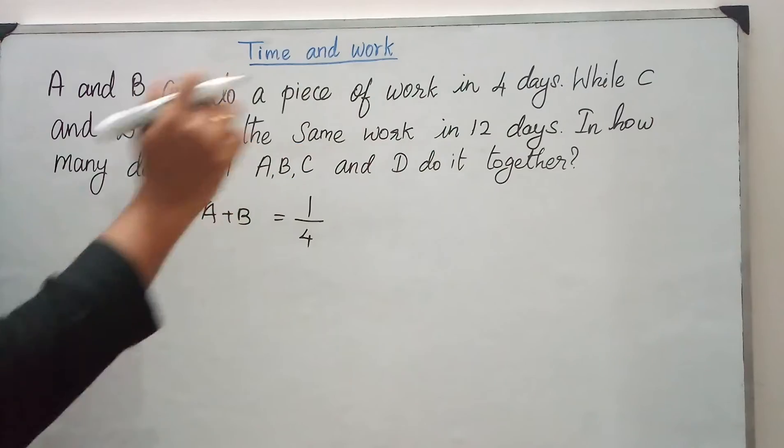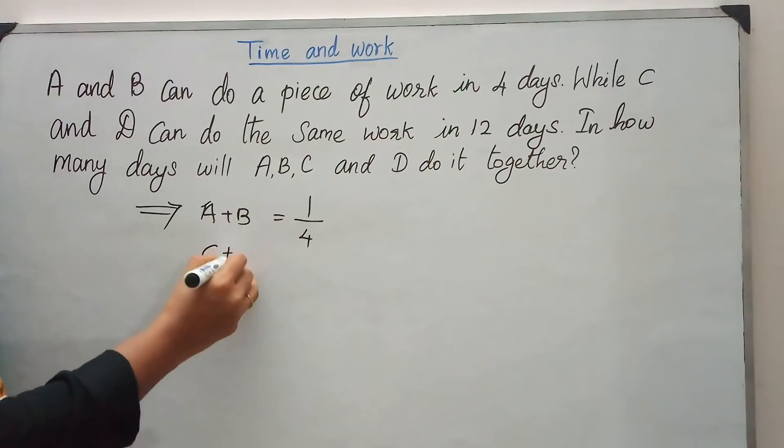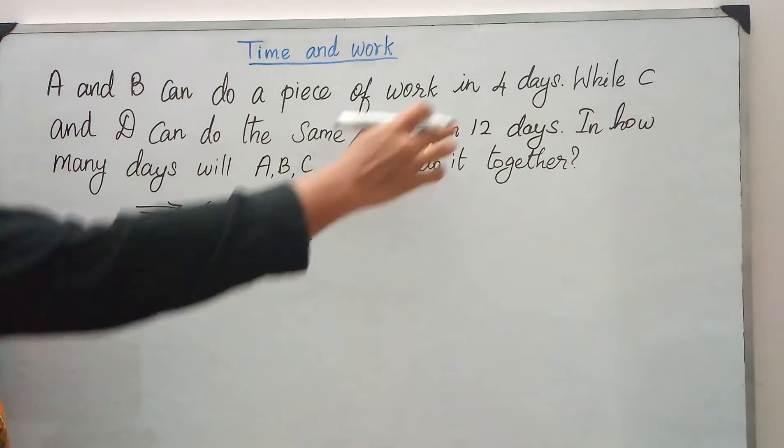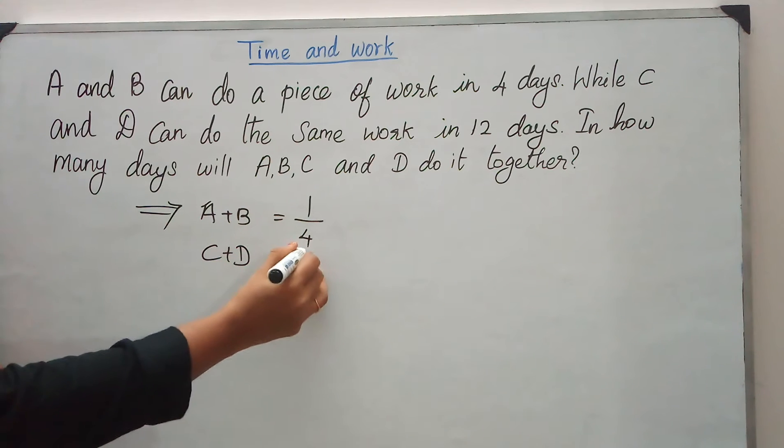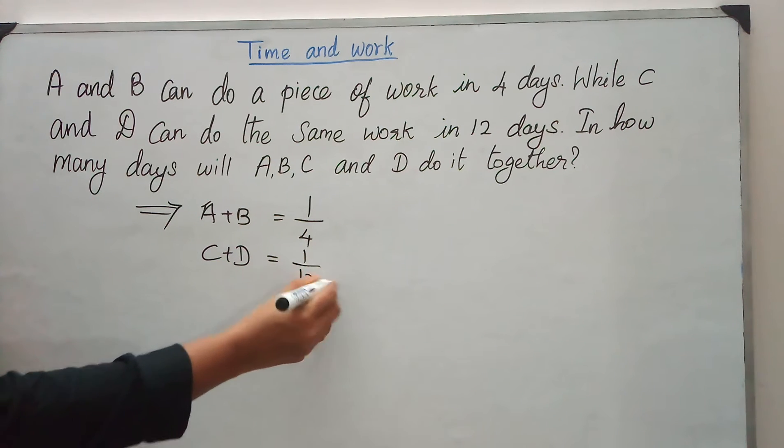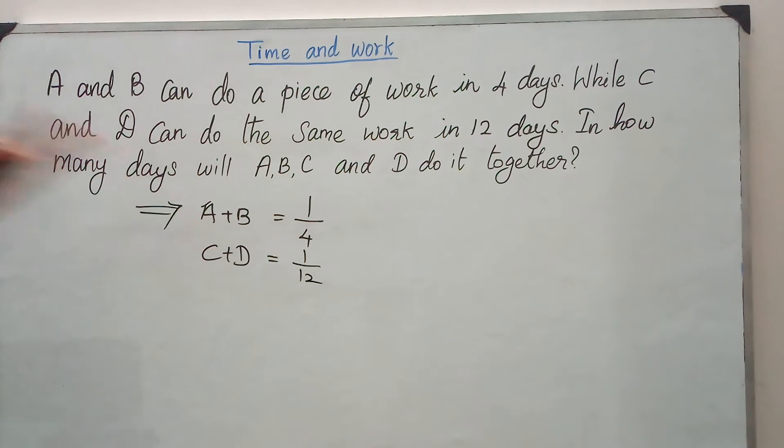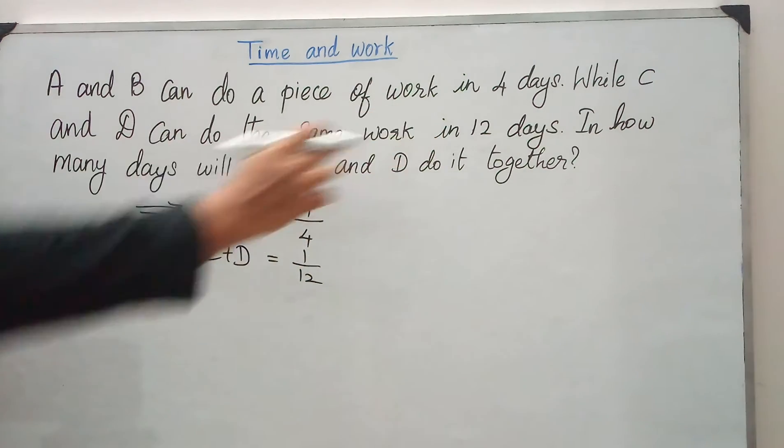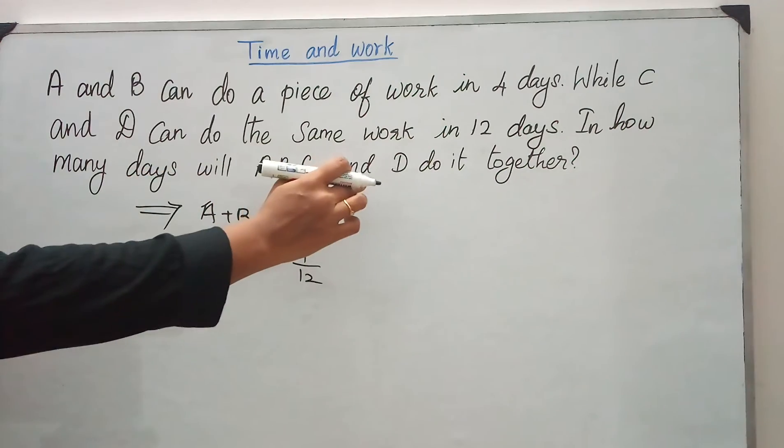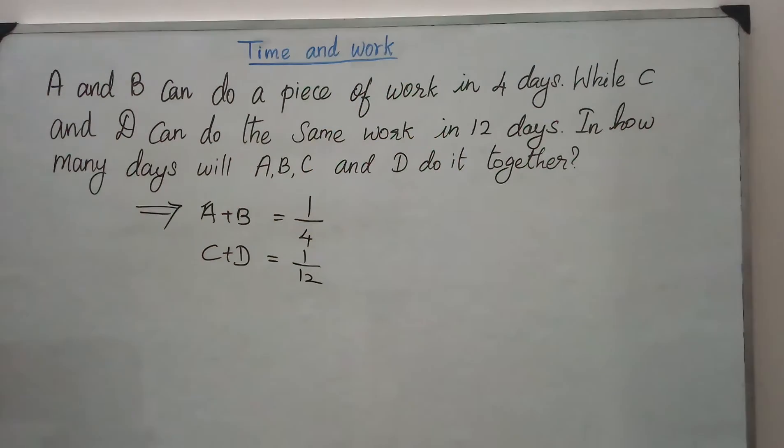So C and D can do the same work in 12 days. So what happens here? You have to convert this into the reciprocal, that is 1 by 12. Now what is our question? How many days will A, B, C, and D do it together?